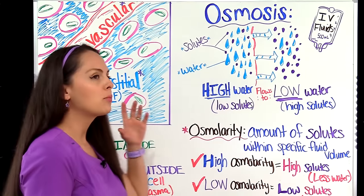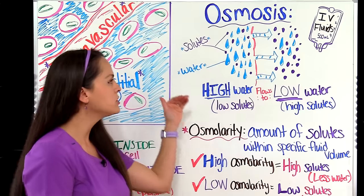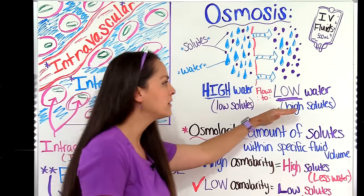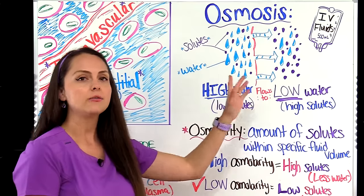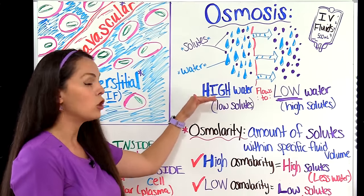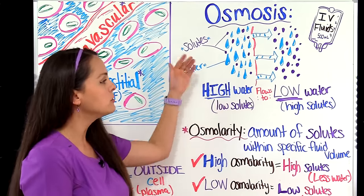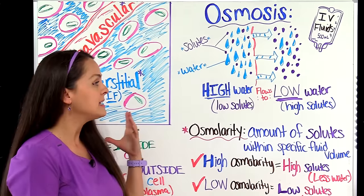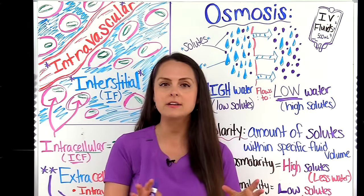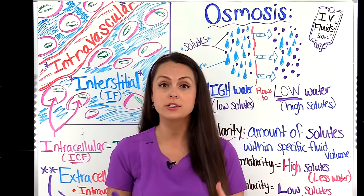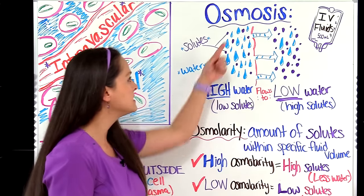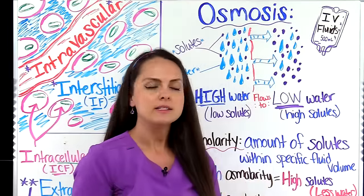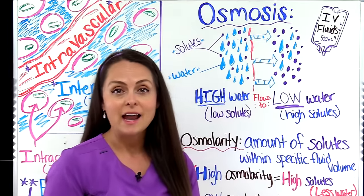Osmosis is a process where water moves from a fluid of a higher water concentration to a fluid of a lower concentration. In other words, water moves from a fluid that has a low solute concentration to a fluid that has a higher solute concentration. It does this passively — it doesn't need any energy from the cell — and it does it through a semi-permeable membrane, which is only permeable to water molecules.